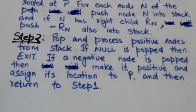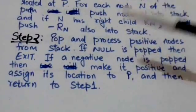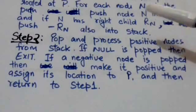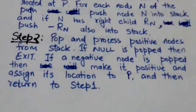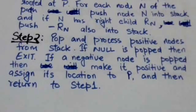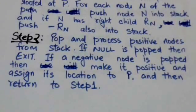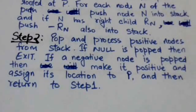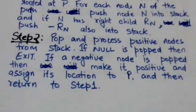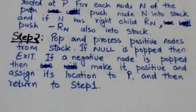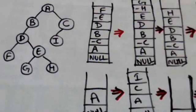In step 2, we will pop and process positive nodes from the stack. If null is popped, the algorithm will stop. If a negative node is popped, we will make it positive and assign its location to variable P, then return to step 1. This will be more clear after the following example.